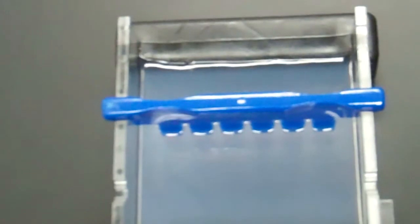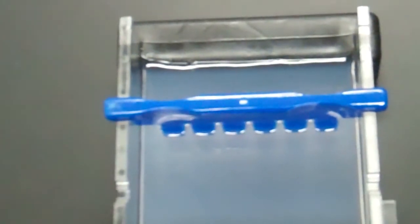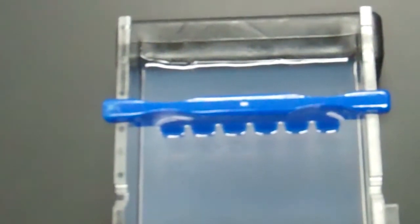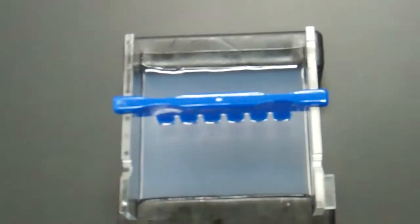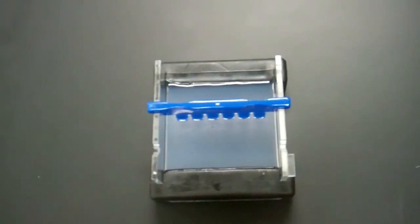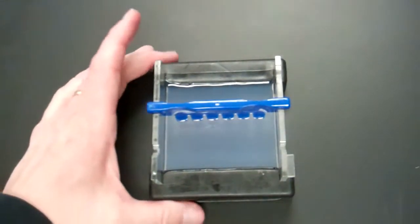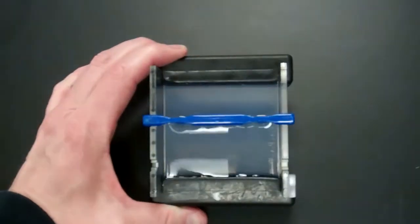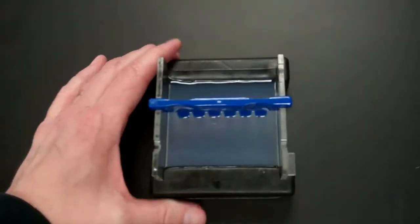And now I want to show you how to remove your gel slab from your casting tray. So you set this up during class and now it's ready to be taken apart.